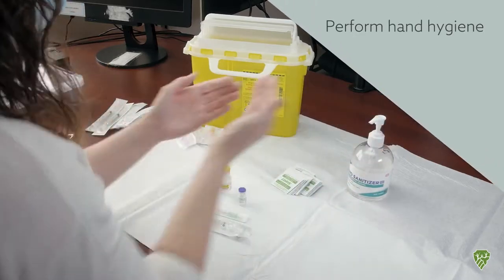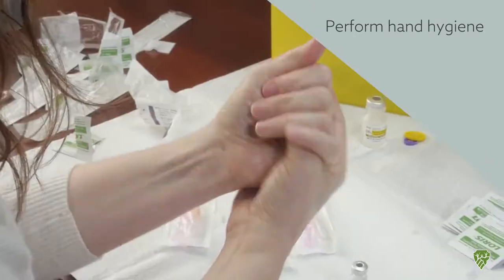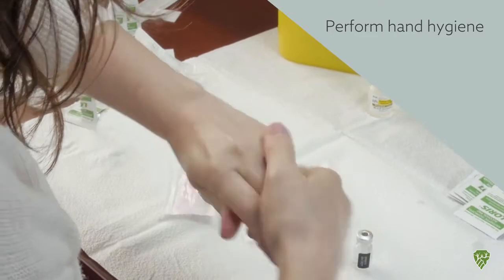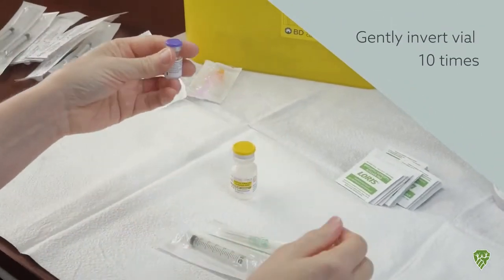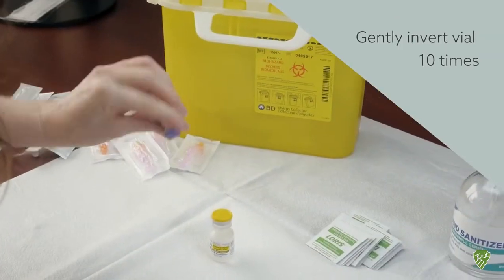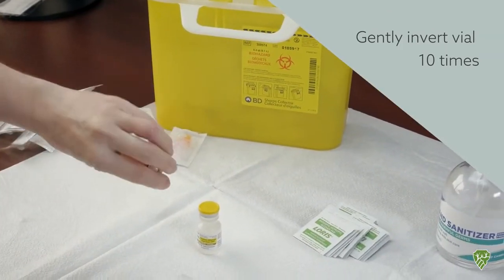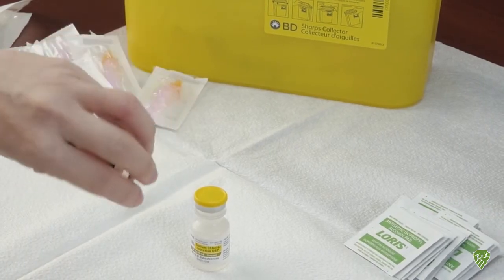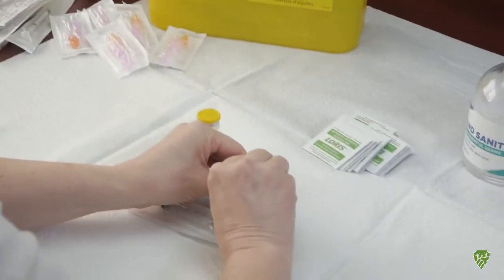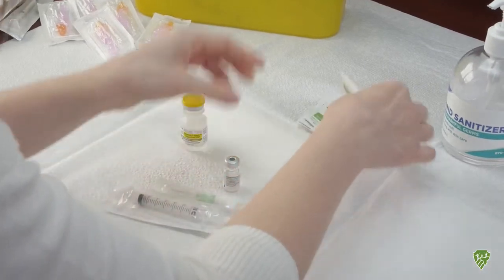Okay, so I'm just going to start off with doing hand hygiene. Then with the vial of vaccine, the first thing to do is invert it 10 times gently. And then I'll be wiping the top off with an alcohol swab.